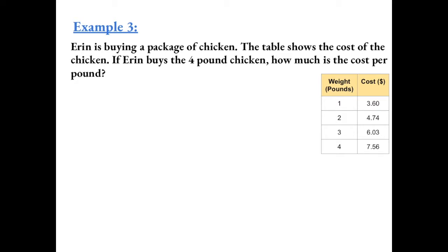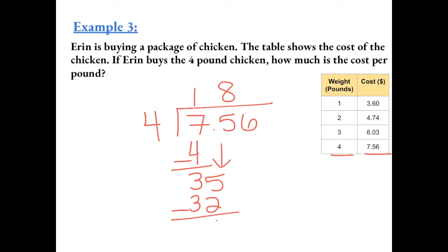Example 3: Aaron is buying a package of chicken. The table shows the cost of the chicken. If Aaron buys the 4 pound chicken, how much is the cost per pound? So 4 pounds of chicken costs $7.56. So we want to know how much is the cost of just 1 pound of chicken. So I'm going to divide 7.56 by 4. So 4 goes into 7 one time. We have 3. Bring down the 5. 4 goes into 35 eight times, which equals 32. Bring down the 6. 4 goes into 36 nine times. Now we carry up the decimal. So the cost per pound is $1.89.